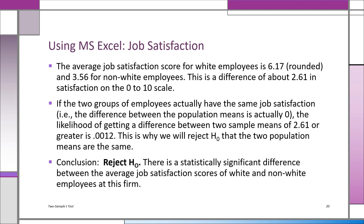This slide summarizes: we tell the boss we found a difference of 2.61 on a 0-to-10 scale, which is quite a bit. The likelihood of getting this is 0.0012, far less than 0.05. We reject H0. The two groups are not the same when it comes to job satisfaction, and this is not sampling error — there's a serious difference between the job satisfaction scores of white and non-white employees.